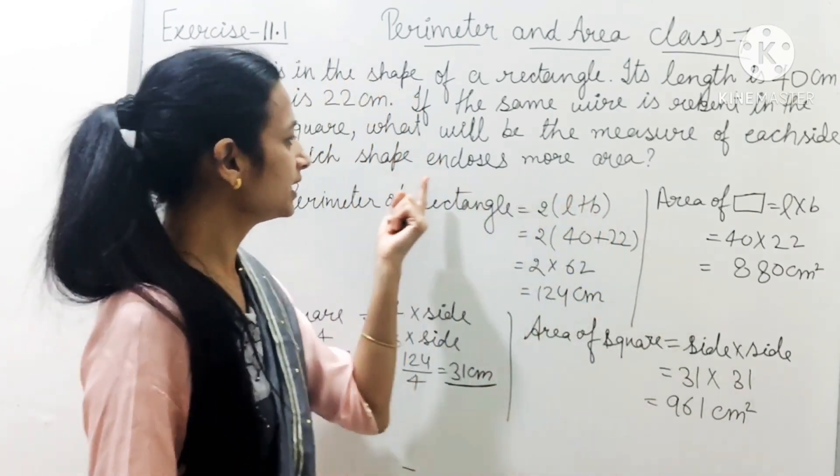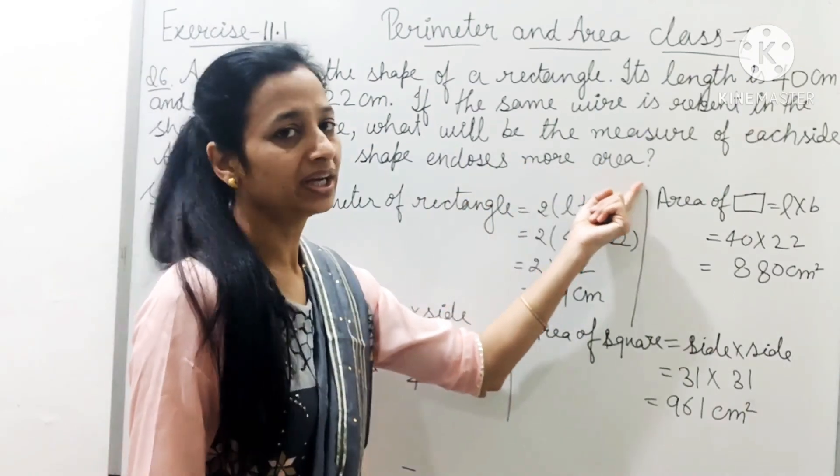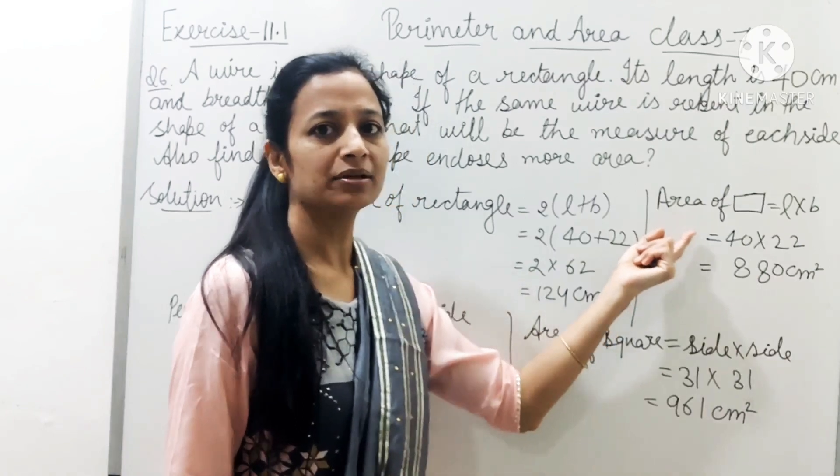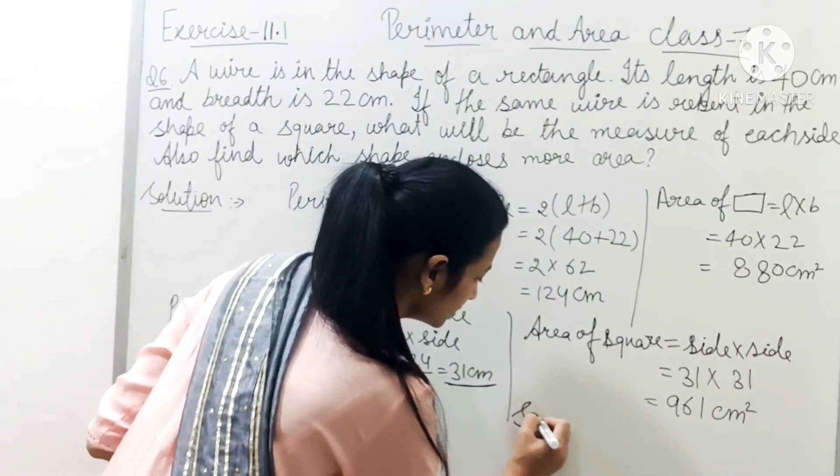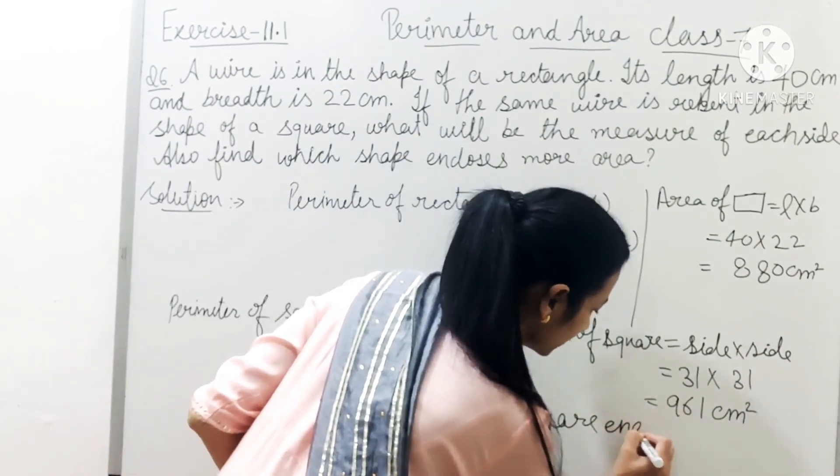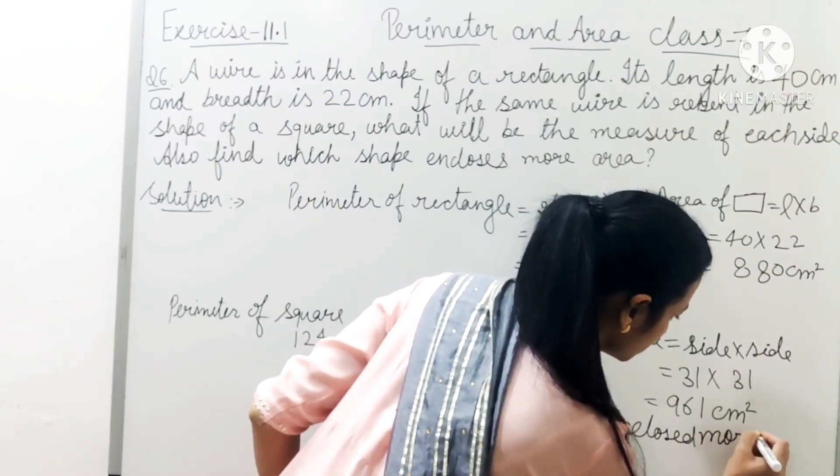Which shape encloses more area? Square shape encloses more area compared to rectangle. So in the answer we write: square enclosed more area.